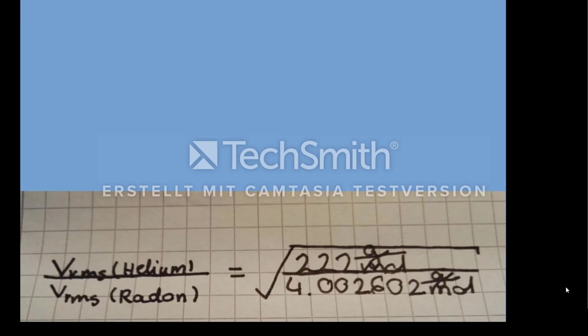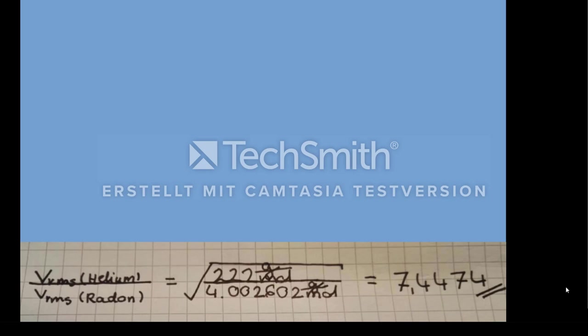After inserting the molar mass of helium and radon from the beginning, we now have the answer to our problem. The root mean square speed of radon is 7.4474 times lower than helium. Thank you.